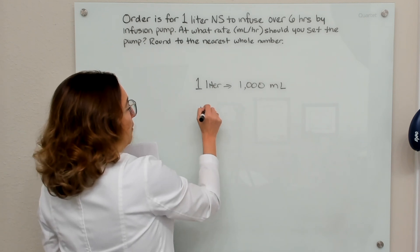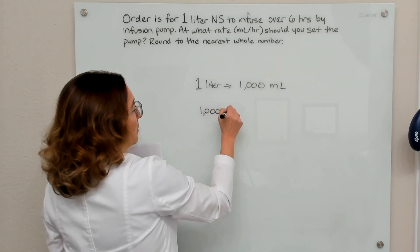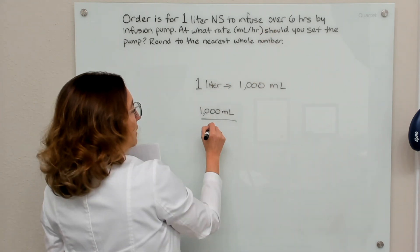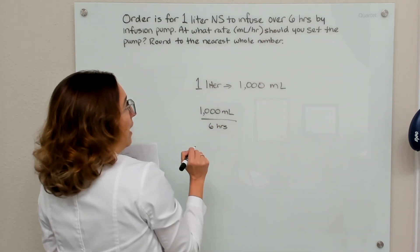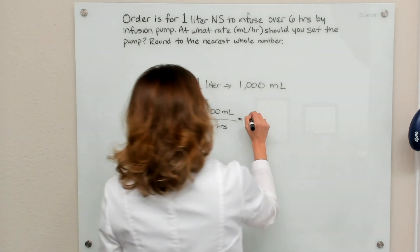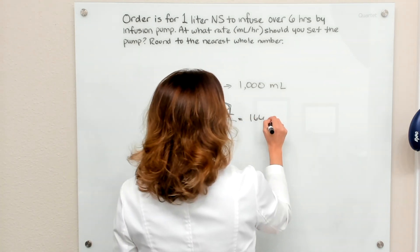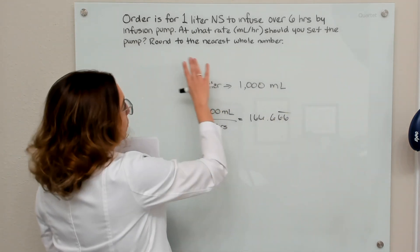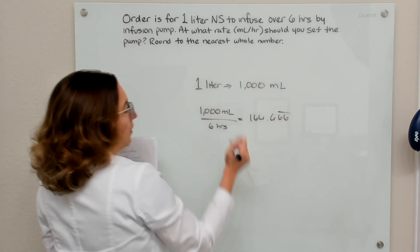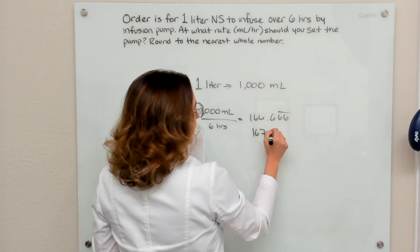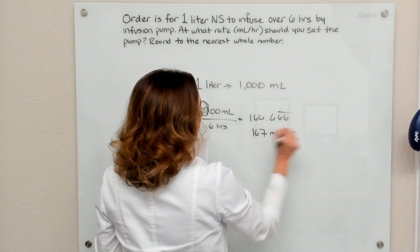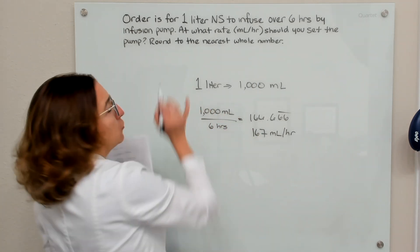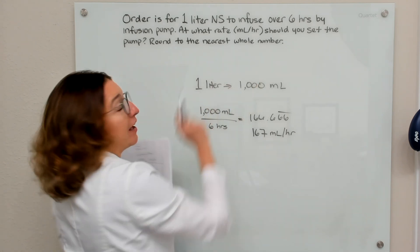Then we can take that volume, 1,000 milliliters, and divide that by the infusion time, which is six hours. That equals 166.666 repeating. Because we need to round this to the nearest whole number, this becomes 167 milliliters per hour. So that's the rate that you would program the infusion pump to in order to carry out that order.